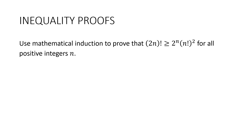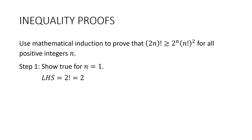Here's another example. Use mathematical induction to prove that (2n) factorial is greater than or equal to 2 to the n multiplied by (n factorial) squared for all positive integers n. Step one: show it's true for n equals one. Left hand side is 2 factorial, which is 2. Right hand side is 2 lots of 1 factorial all squared, which is also 2. Since 2 equals 2, it's true for n equals one.